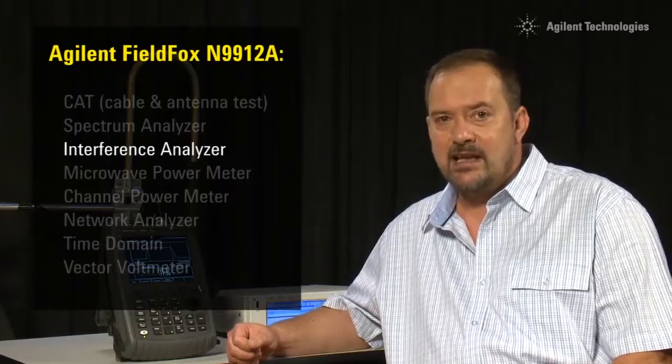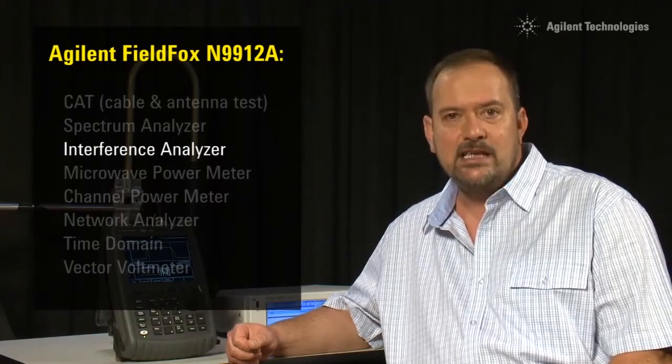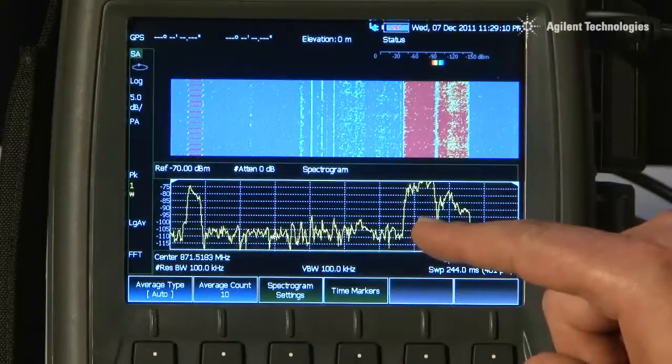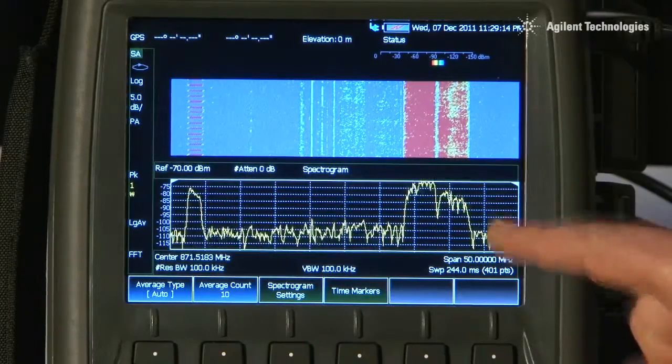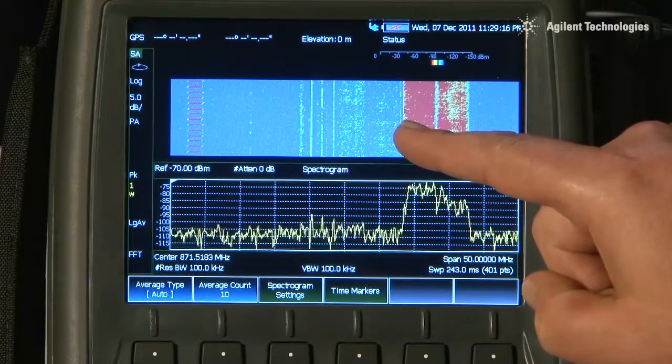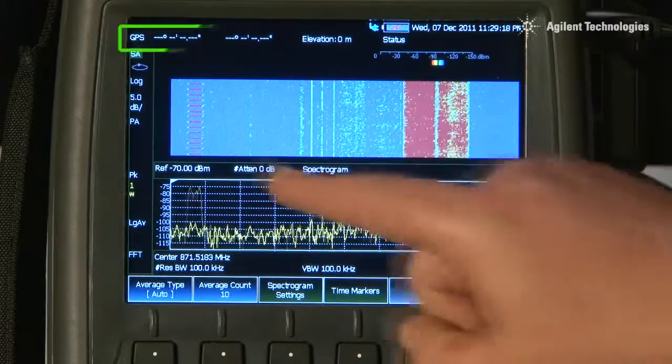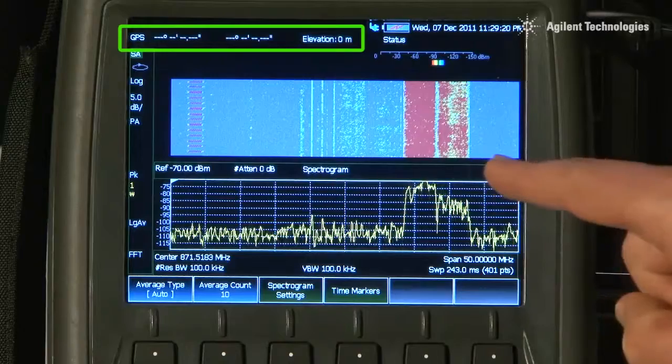There is an optional interference analyzer that identifies unknown or intermittent signals with built-in spectrogram logging and waterfall displays. These spectrum records are automatically logged to the internal memory or USB memory stick, with time and date stamp and GPS position without the need for an external PC.